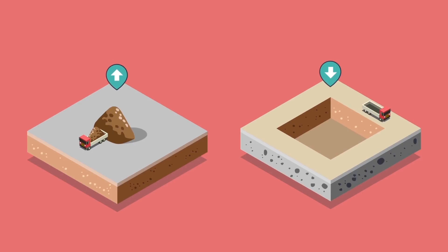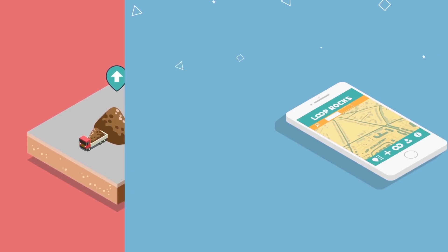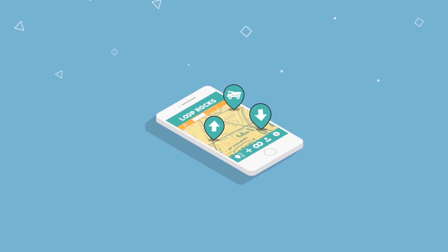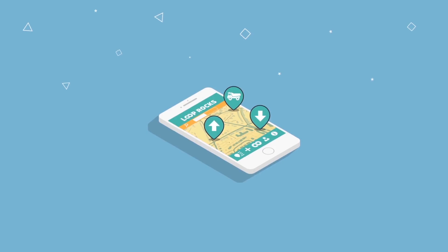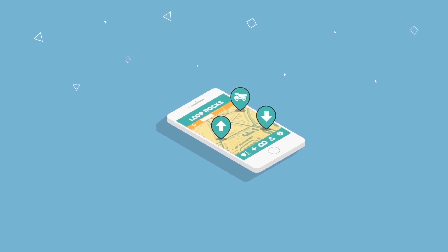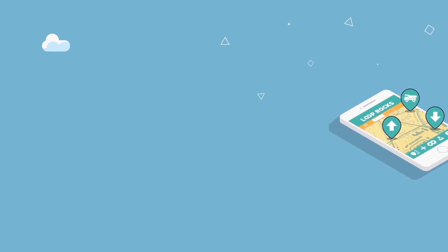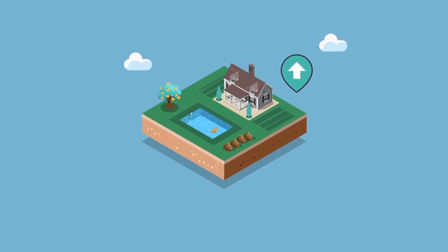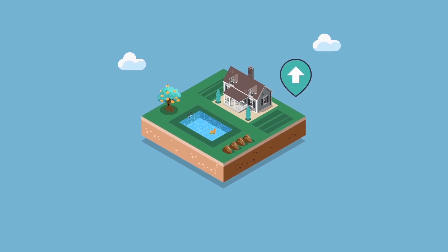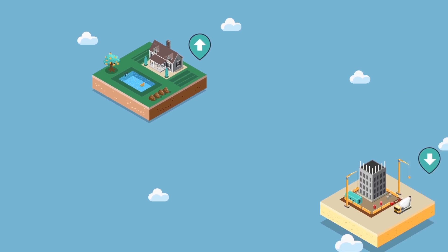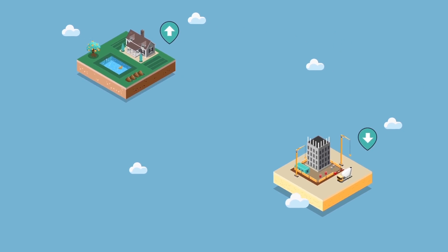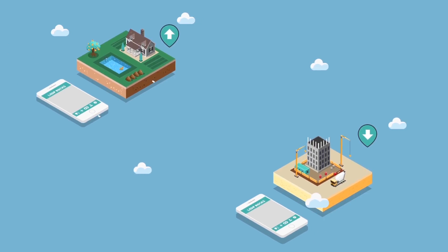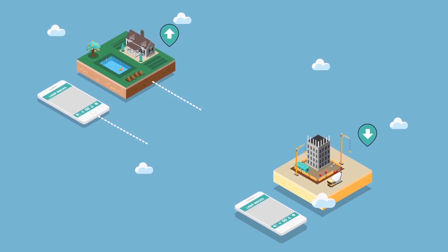With the app, you easily get an overview of the supply and demand of material in your area, helping you optimize handling and transportation. Did the new pool leave you with a surplus of aggregates, or is 10,000 tons needed at the construction site? Thanks to the smart matching function, you can find other users in your area that meet your needs.